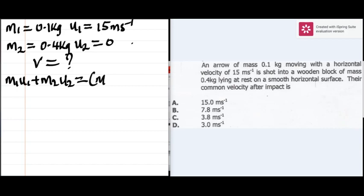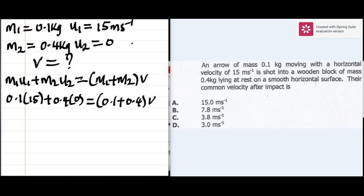m1 is 0.1, u1 is 15, plus m2 is 0.4, u2 is 0. We have m1, 0.1 plus 0.4. 0.1 multiplied with 15 gives us 1.5.